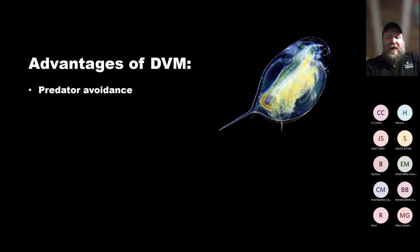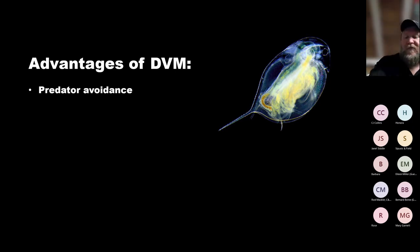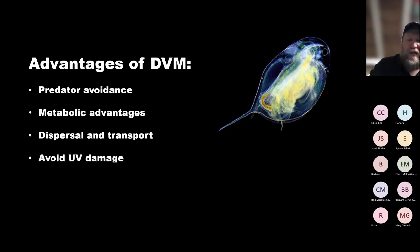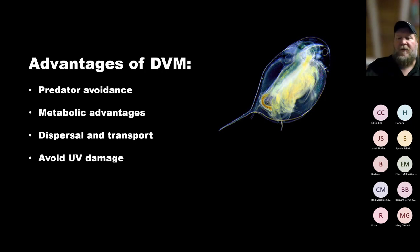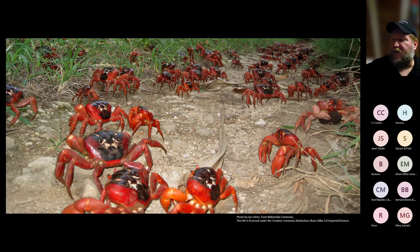Advantages of this movement include avoiding predators — it's harder to see you in the dark. Going up into upper water levels when it's dark helps you graze on phytoplankton. There are metabolic advantages to getting that food, and it helps with dispersal and transport, and avoids ultraviolet damage. There's also evidence that fish size matters — a large fish might move sooner through the water column, while a smaller fish that's more vulnerable to predation might wait until it's much darker before moving up.